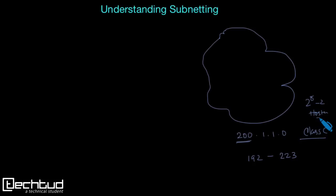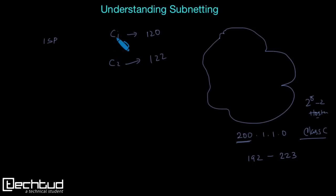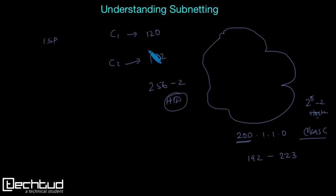Let's assume a case where I am an Internet Service Provider with two clients. Client 1 needs a network with 120 hosts and Client 2 needs 122 hosts. The ISP can assign two different network IDs to these two clients, but there will be wastage of host IDs because this Class C network has capacity for 256 minus 2 host IDs, while each client needs only around 120. So more than half would be wasted — and that's where subnetting is introduced.